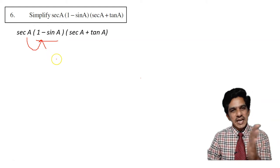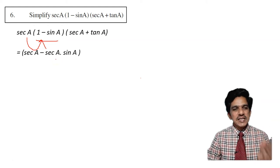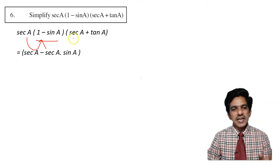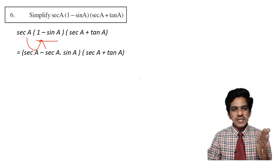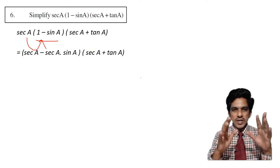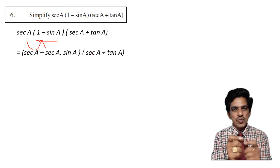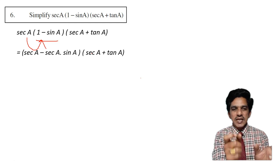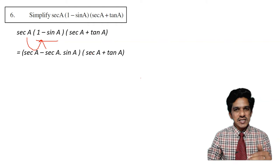This becomes secant a into 1 minus secant a into sin a. That gives you secant a minus secant a into sin a, and secant a plus tan a we will carry as it is. So by multiplying the two terms, we get secant a minus secant a into sin a, and the second factor secant a plus tan a remains as it is.